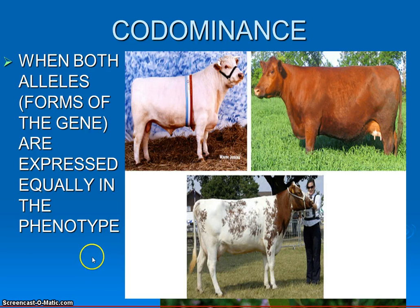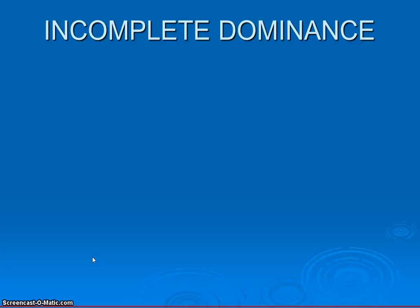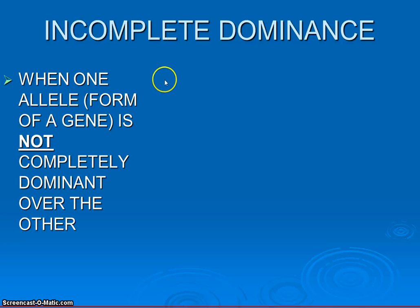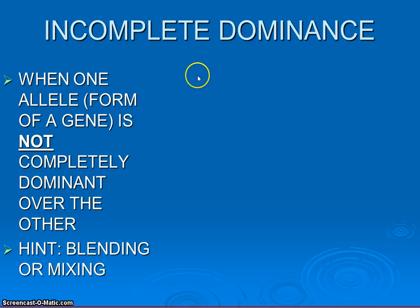Now, that's just one of these strange types of inheritance. If we move on, there's another one that's sometimes easily confused but is different from co-dominance. This one is entitled incomplete dominance, or not quite completely dominant. Just as the name implies, one of the alleles is kind of dominant — not completely dominant over the other one. It's almost as if it's trying to be dominant, but can't quite entirely mask the other allele.